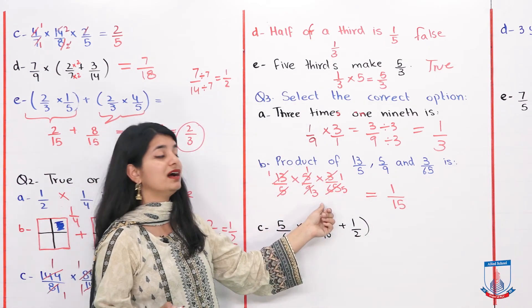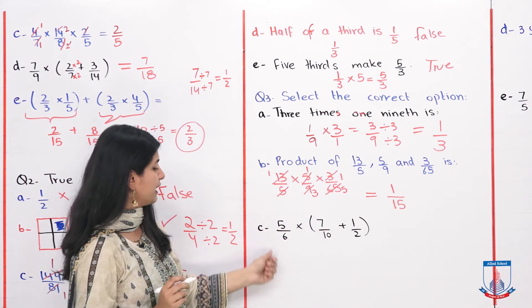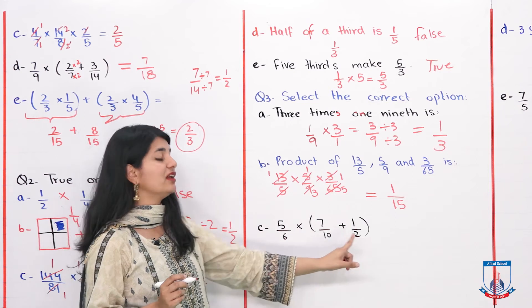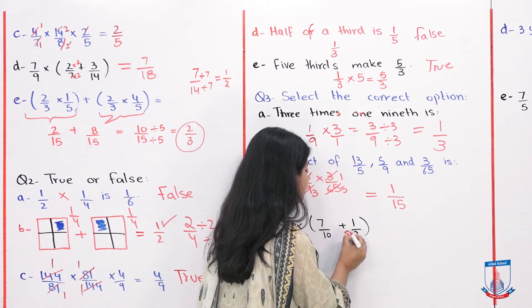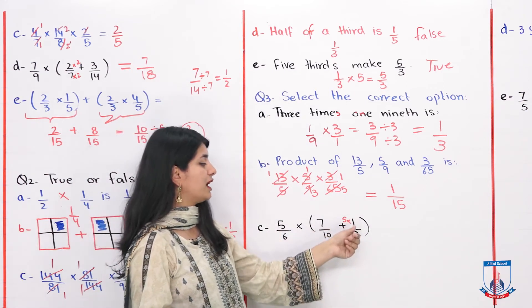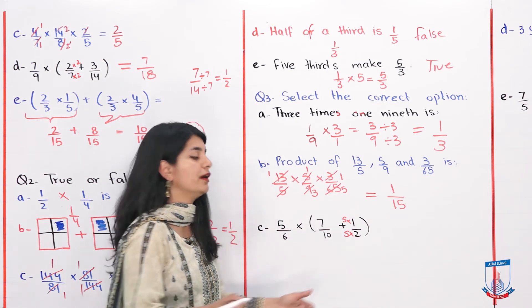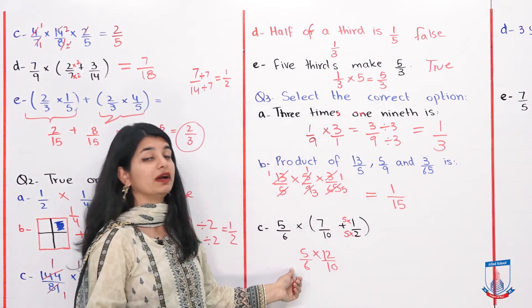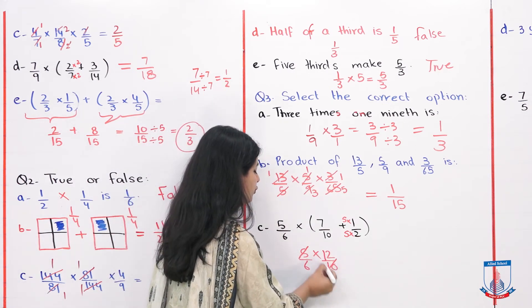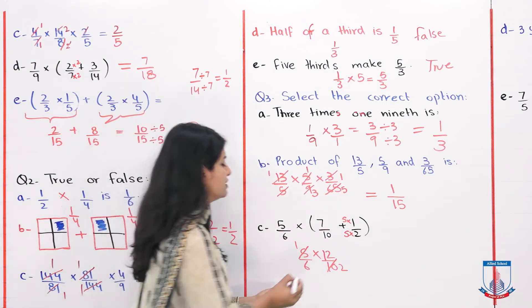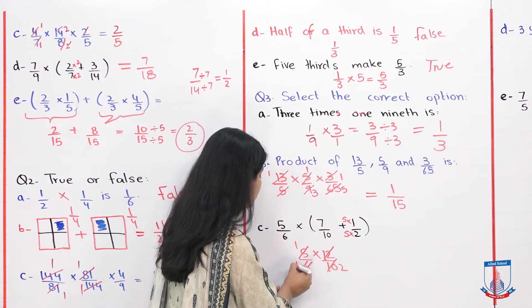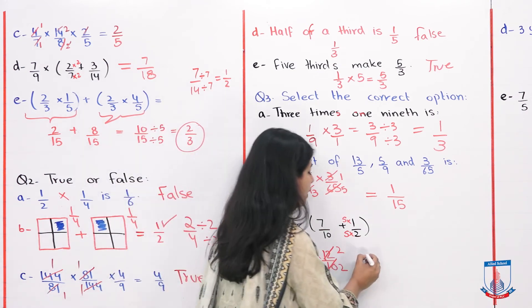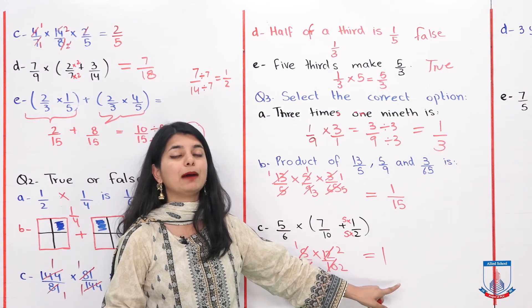Part C is 5 over 6 into 7 over 10 plus 1 over 2. First we add the bracket: both denominators need to be the same, so multiply 1 over 2 by 5 to get 5 over 10. So 7 over 10 plus 5 over 10 is 12 over 10. Then 12 over 10 multiplied by 5 over 6: cancel 5 and 10 by 5, leaving 1 and 2; cancel 12 and 6 by 6, leaving 2 and 1. So 2 over 2 is 1. The answer is 1.